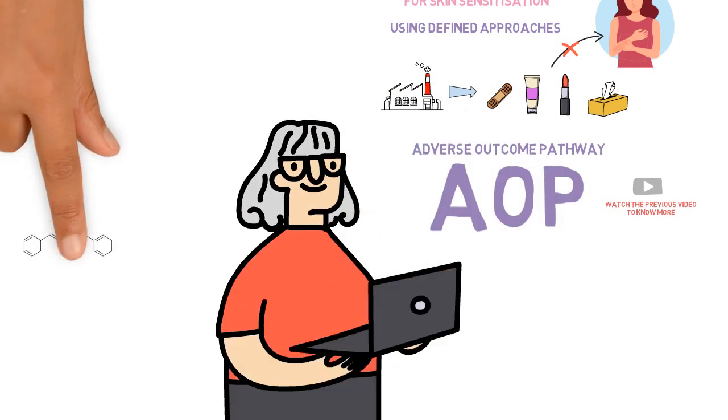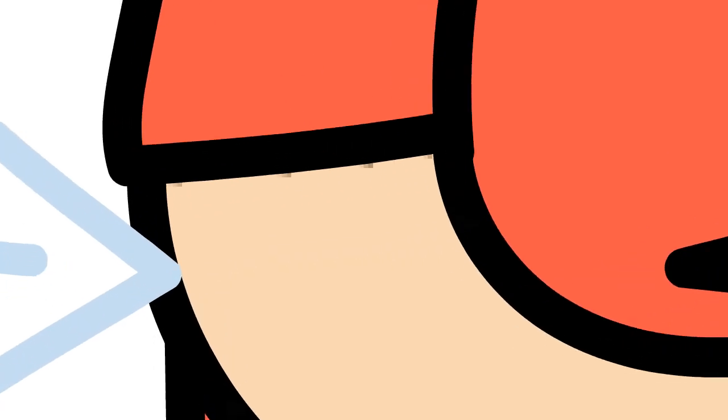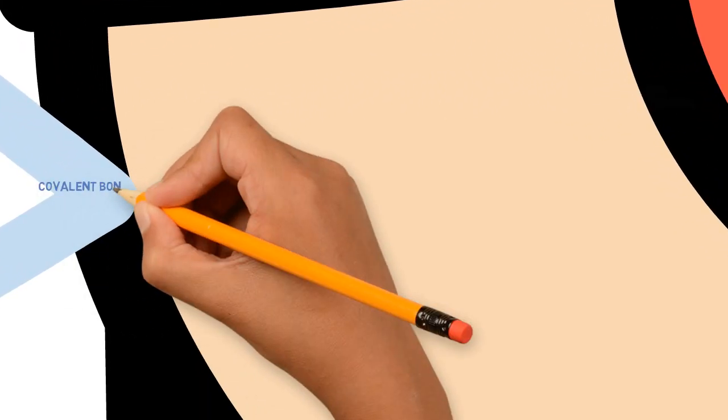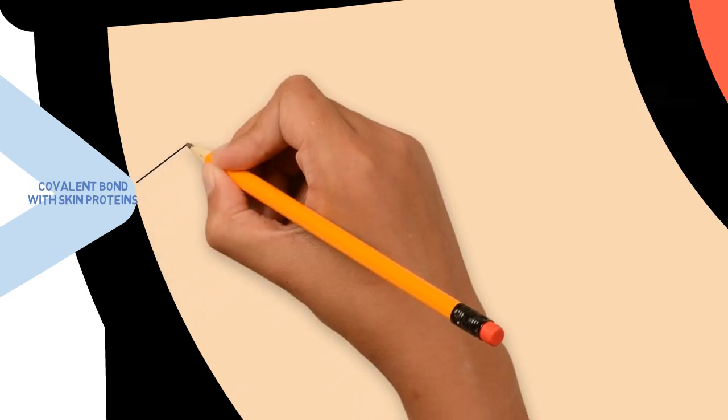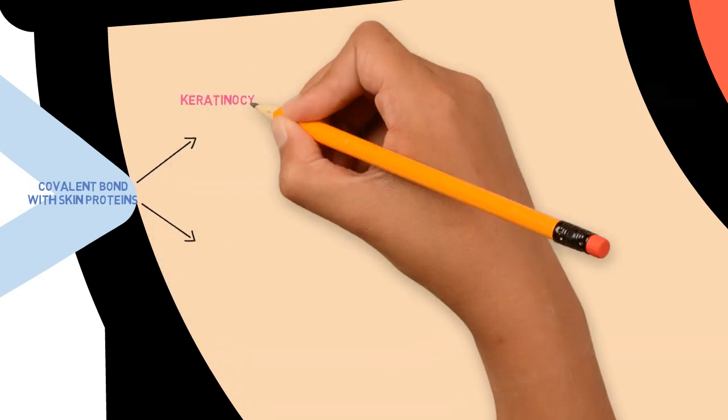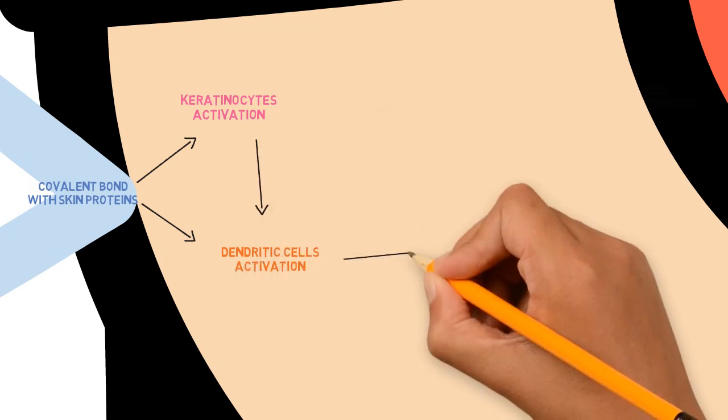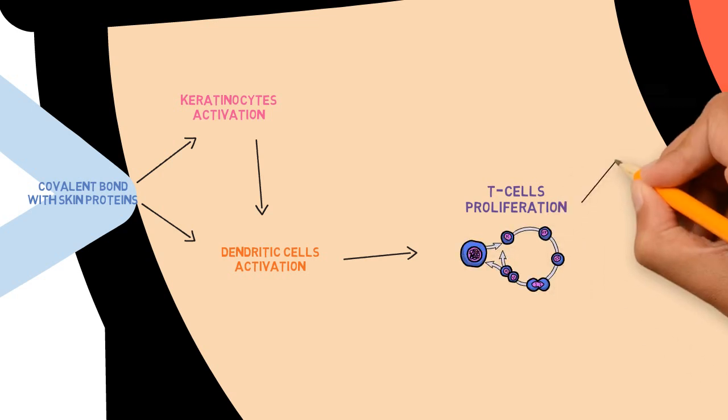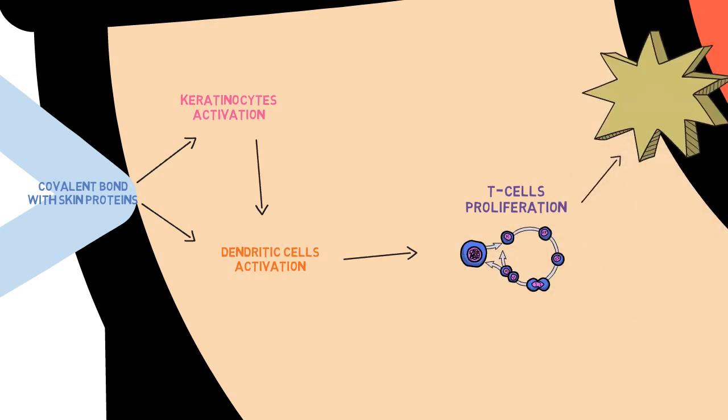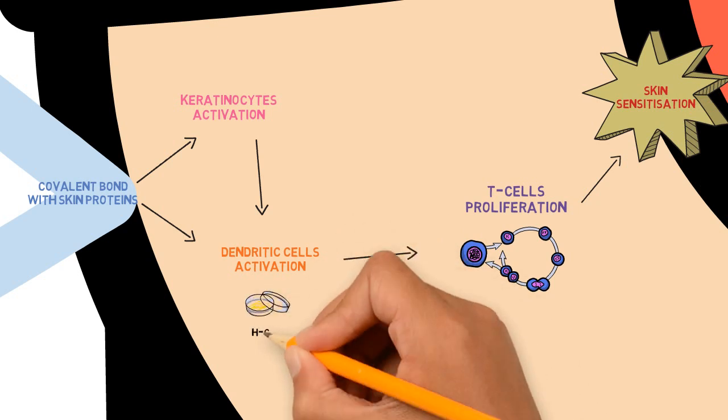Imagine a chemical that causes skin sensitization. How does this happen in our body? First of all, it needs to be able to covalently bind to our skin proteins. When this happens, this triggers a biological cascade involving keratinocytes activation, dendritic cells activation, and T-cell proliferation, which ultimately causes skin sensitization. Now there are assays to measure each of the events in this cascade.